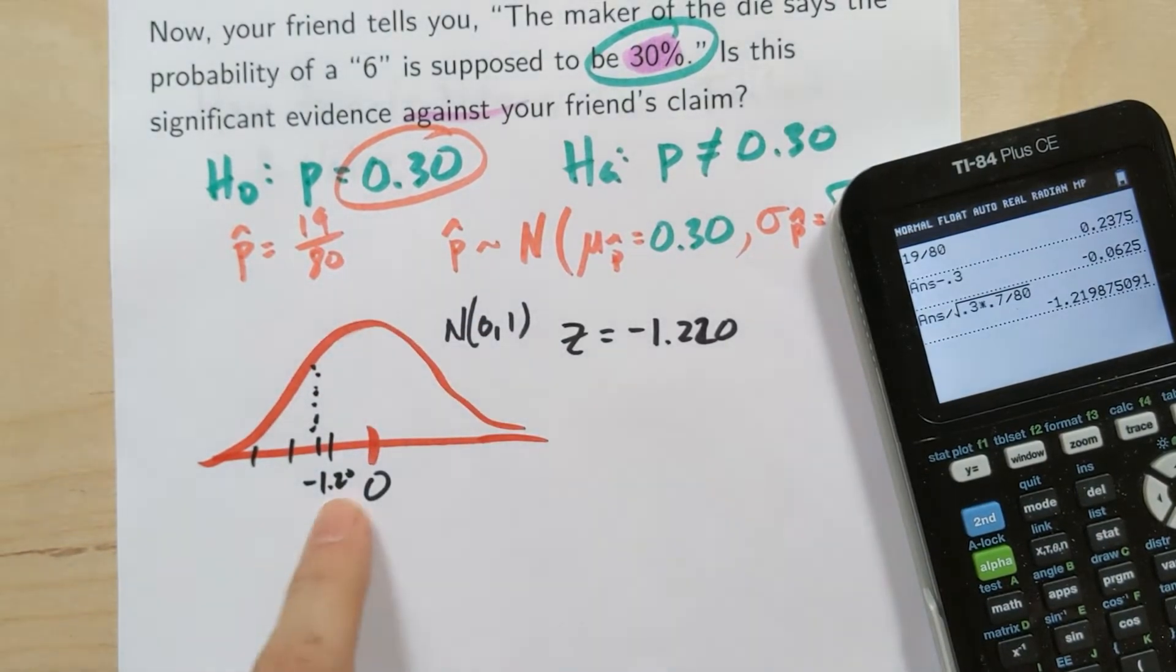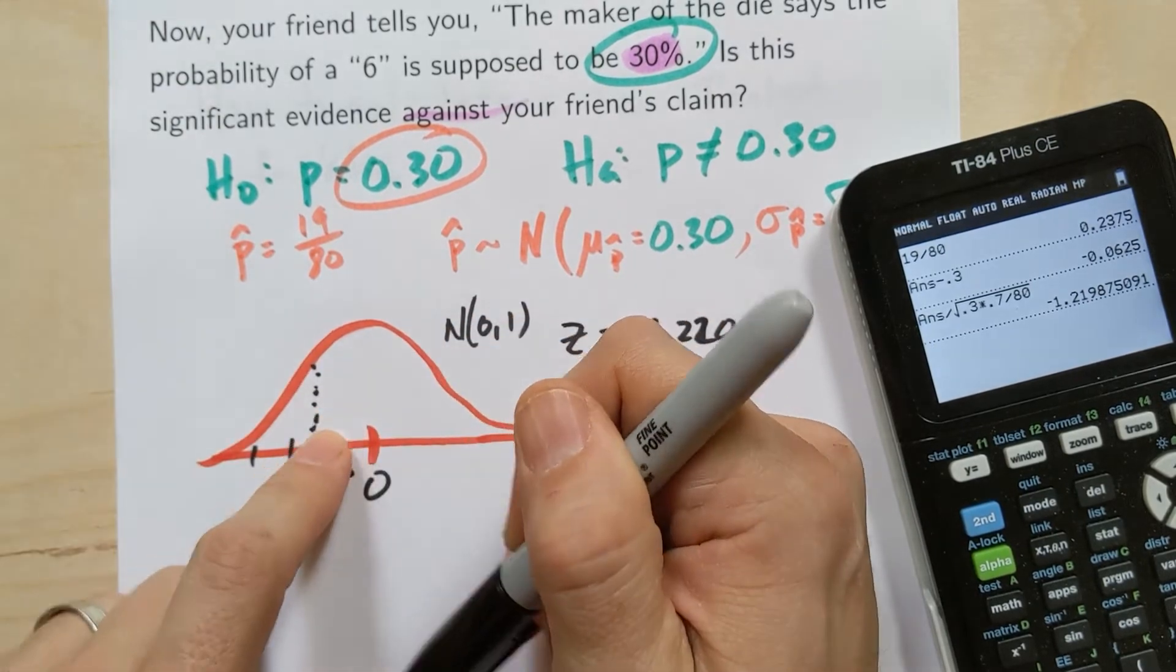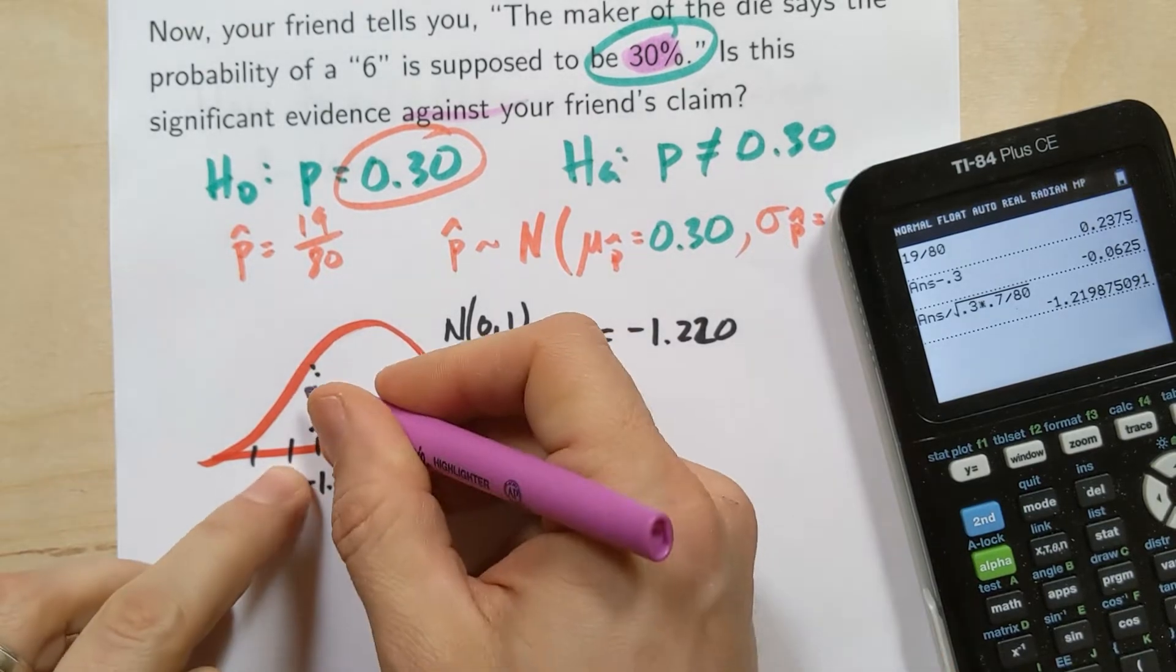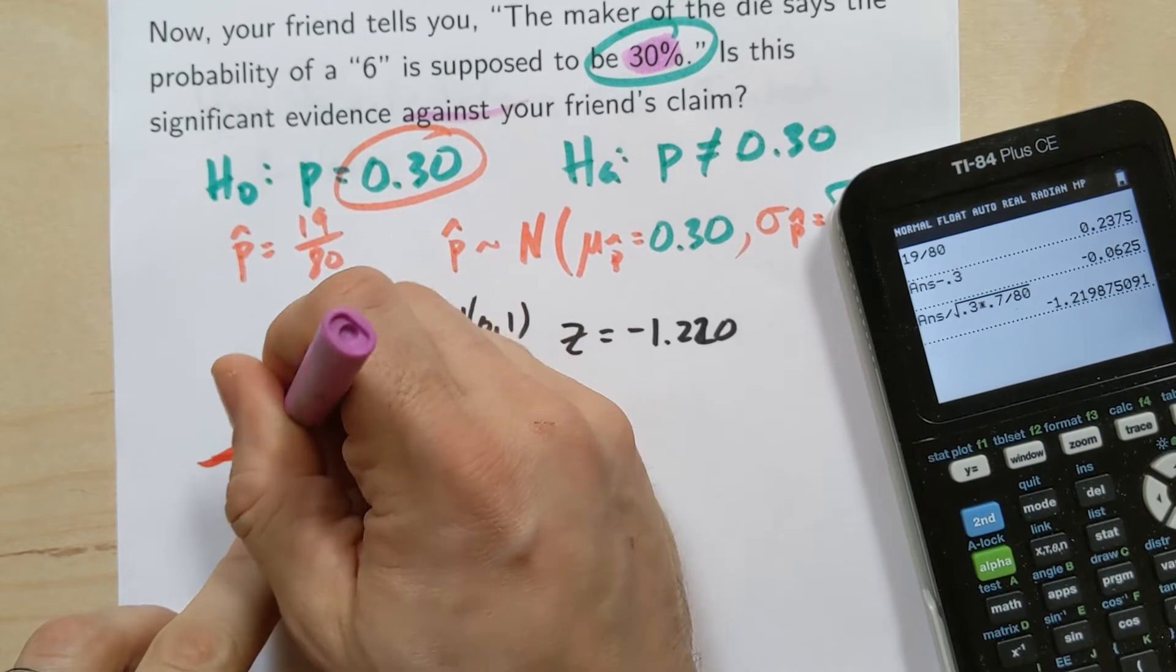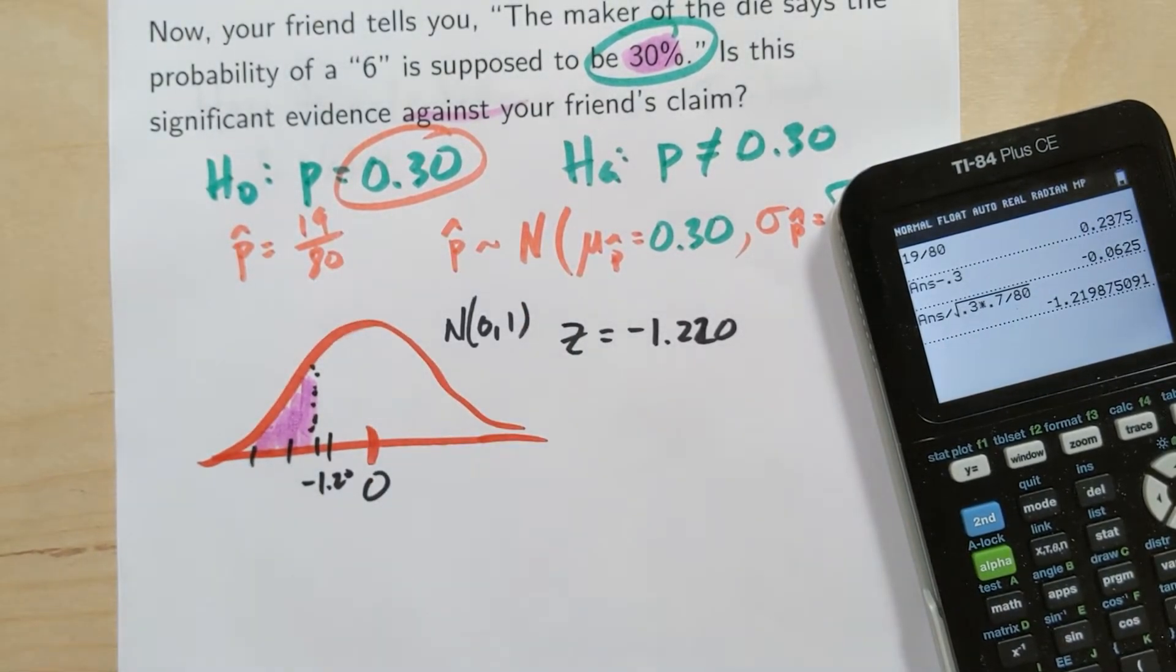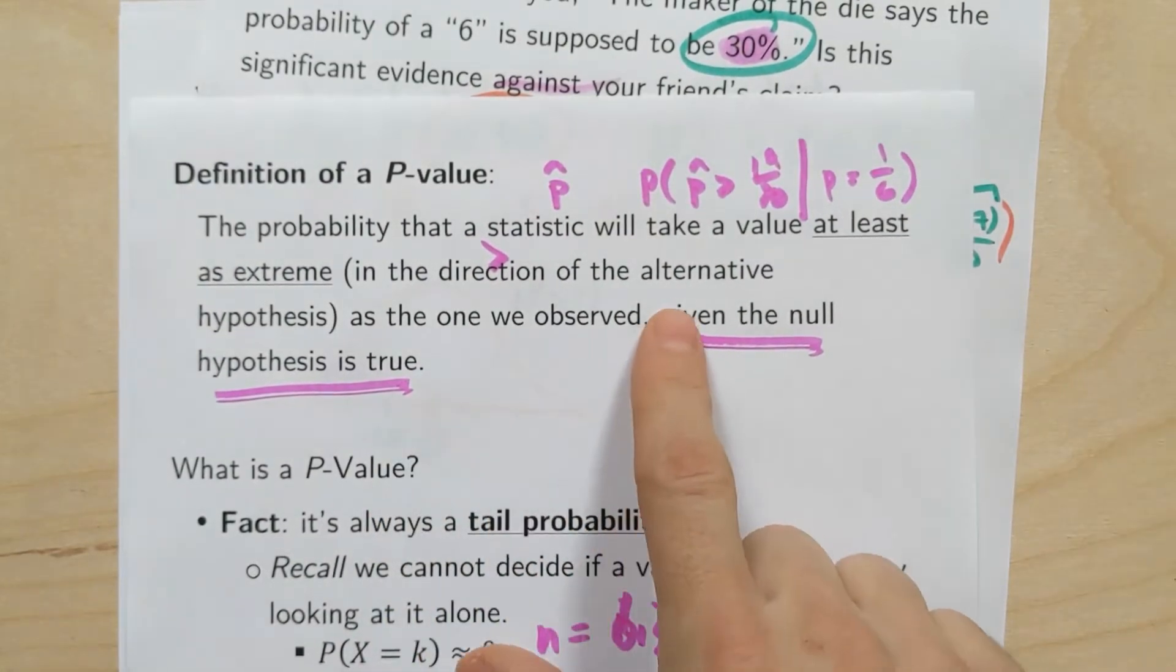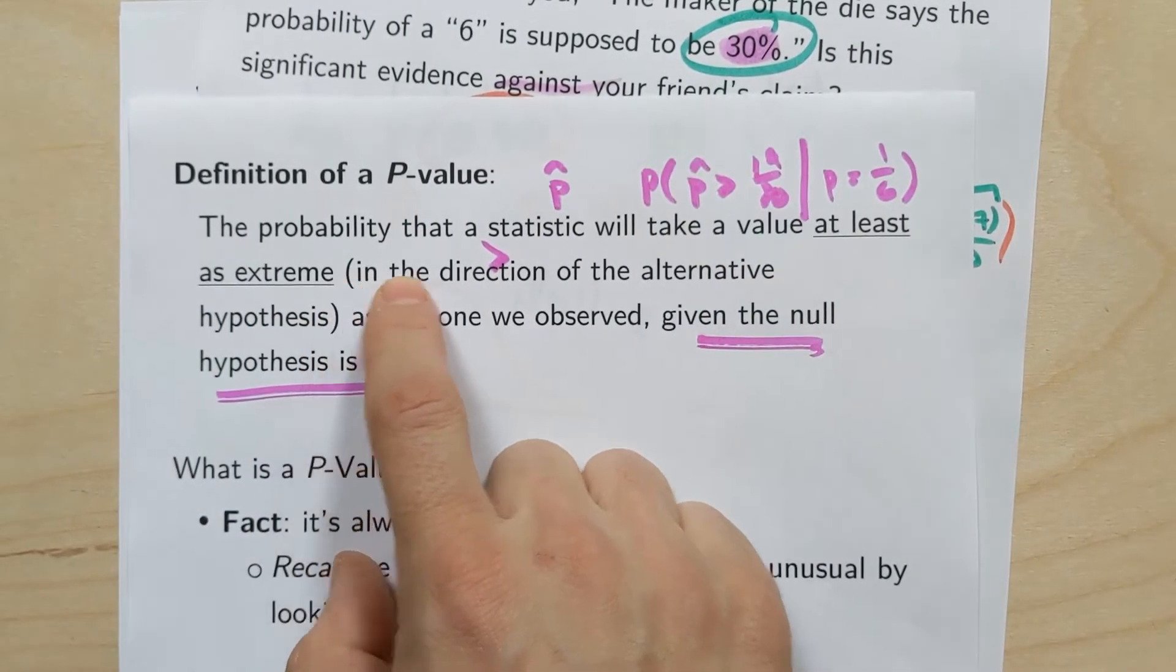So, okay. Now how do I turn this into a P value? Once again, it's not a matter of just looking at a single value in isolation. We have to go back to the definition of a P value. And our first inclination is, okay, let's just shade everything to the left. Since the Z score was negative over on this side, we could shade everything this way. But the real question is, is that really the only thing that I'm looking for based on the definition of a P value. Remember the definition of a P value was the probability that a statistic will take a value at least as extreme in the direction of the alternative.